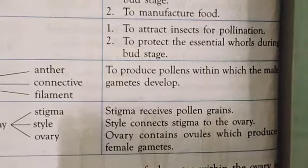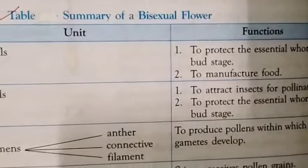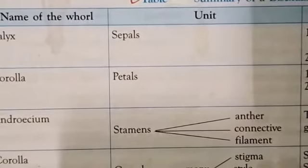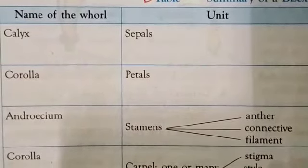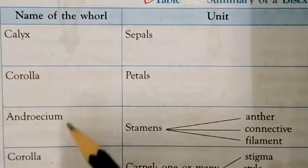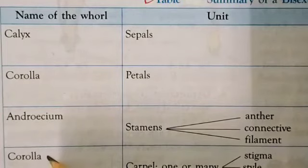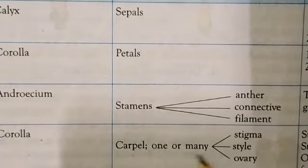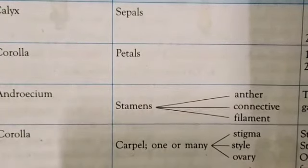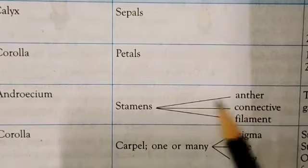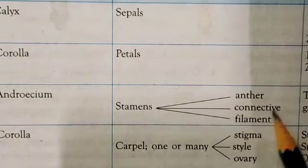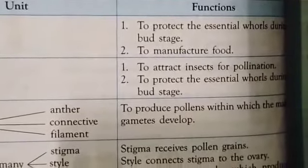This is the overall summary of a bisexual flower, in which the whorls are calyx, corolla, androecium, and gynoecium. Gynoecium has carpels — one or many — that is stigma, style, and ovary. Androecium has stamens, each having an anther, a connective, and a filament. Each whorl has a different function.